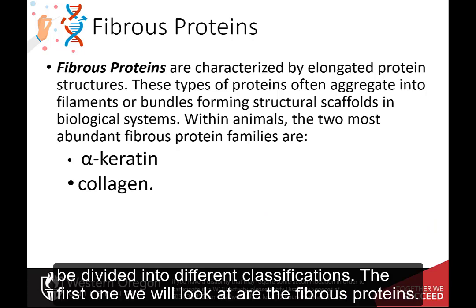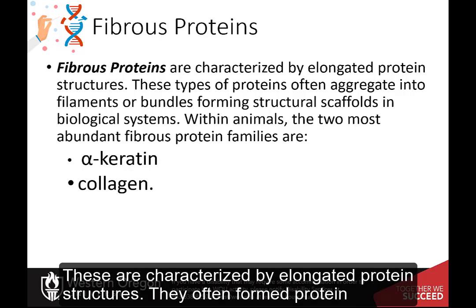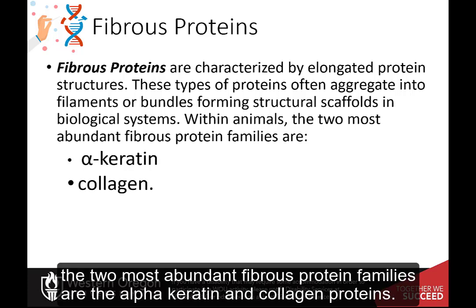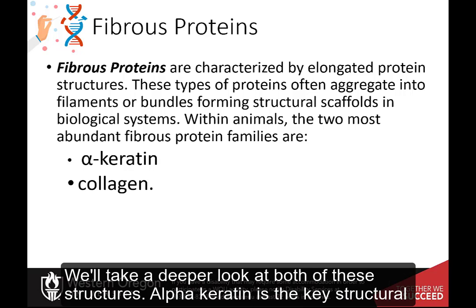Proteins can be divided into different classifications. The first one we will look at are the fibrous proteins. These are characterized by elongated protein structures. They often form protein aggregates and create filaments or bundles that form structural scaffolds. Within animals, the two most abundant fibrous protein families are the alpha-keratin and collagen proteins.